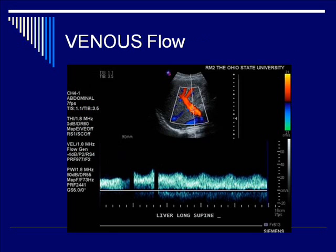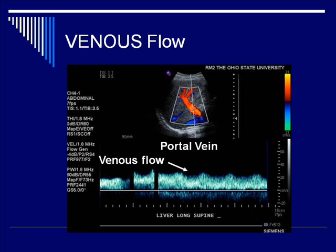This is a venous duplex Doppler diagram across the liver where the portal vein is having the gate of the Doppler signal measured. You'll note that the venous blood flow has a flat pattern, as opposed to the triphasic pattern you'll see later in this lecture for arteries.